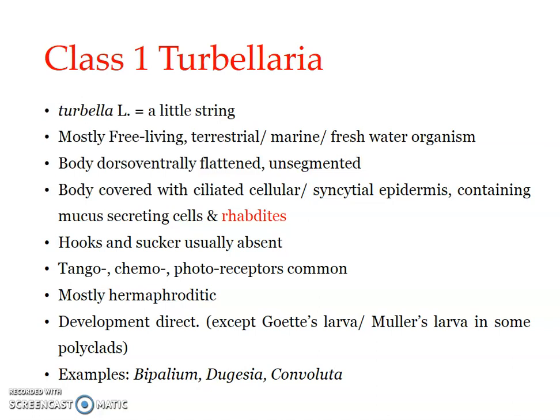Regarding the excretory and osmoregulatory organs, these function via protonephridia with flame cells. The nervous system is simple with an unspecialized brain and two or more longitudinal nerve cords. Sense organs are mainly represented by tangoreceptors, chemoreceptors, and photoreceptors.